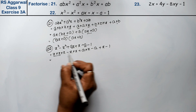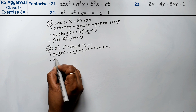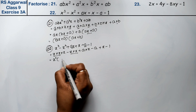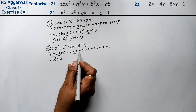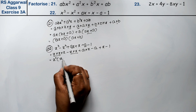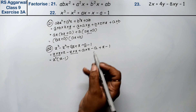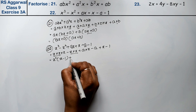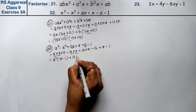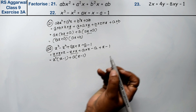Now, in the first two terms, x² is common — so x and minus 1 remain. Everything is removed, so we get 1. In the next two terms, plus a is common, giving x minus 1.